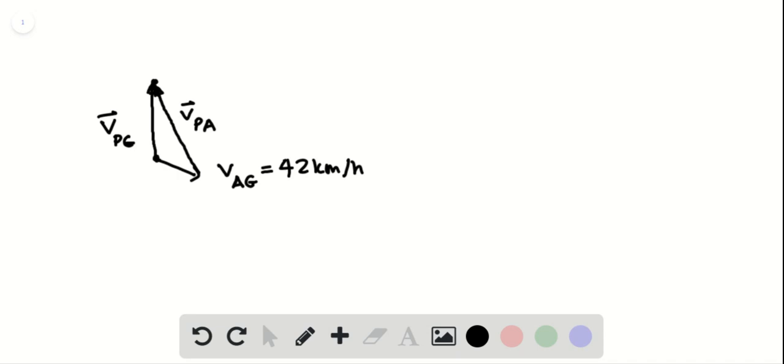As you can see here, VPA plus VAG equals VPG vectorially. That's the addition.